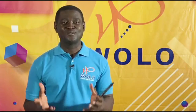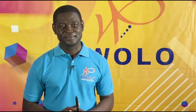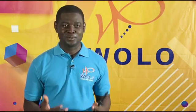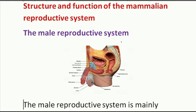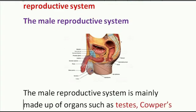For the male reproductive system, I'm going to look at the structure — what comes together to form the male reproductive system. First, let's look at a diagram of the male reproductive system and identify some organs that come together to form it.